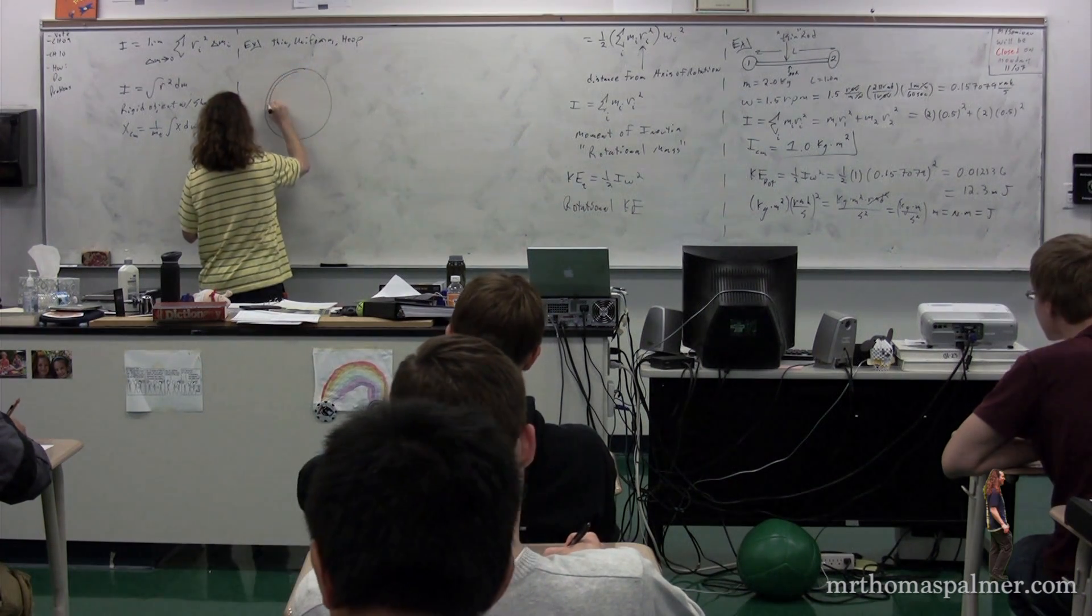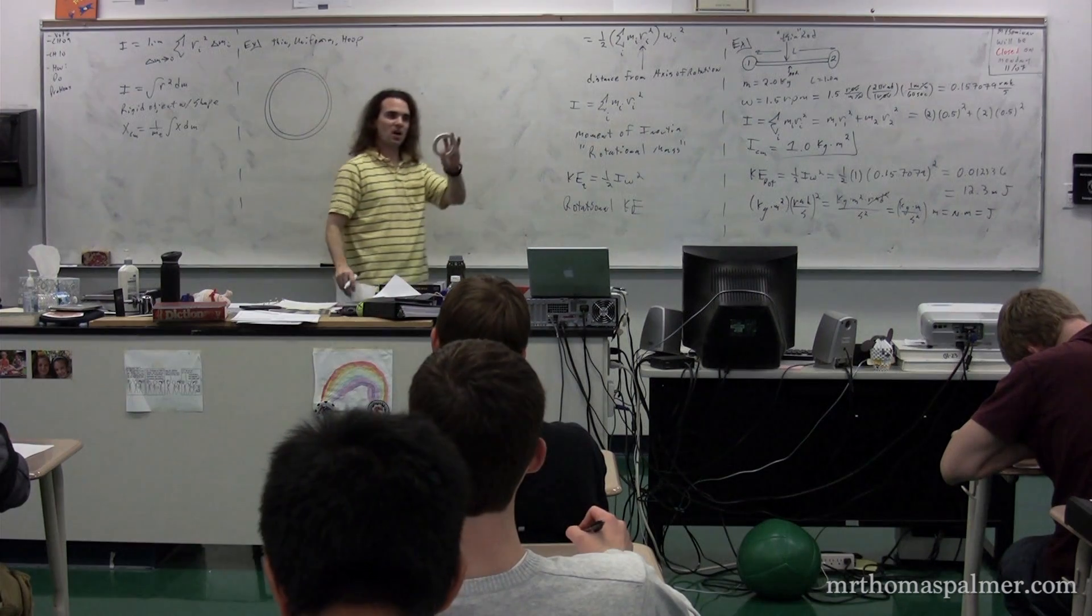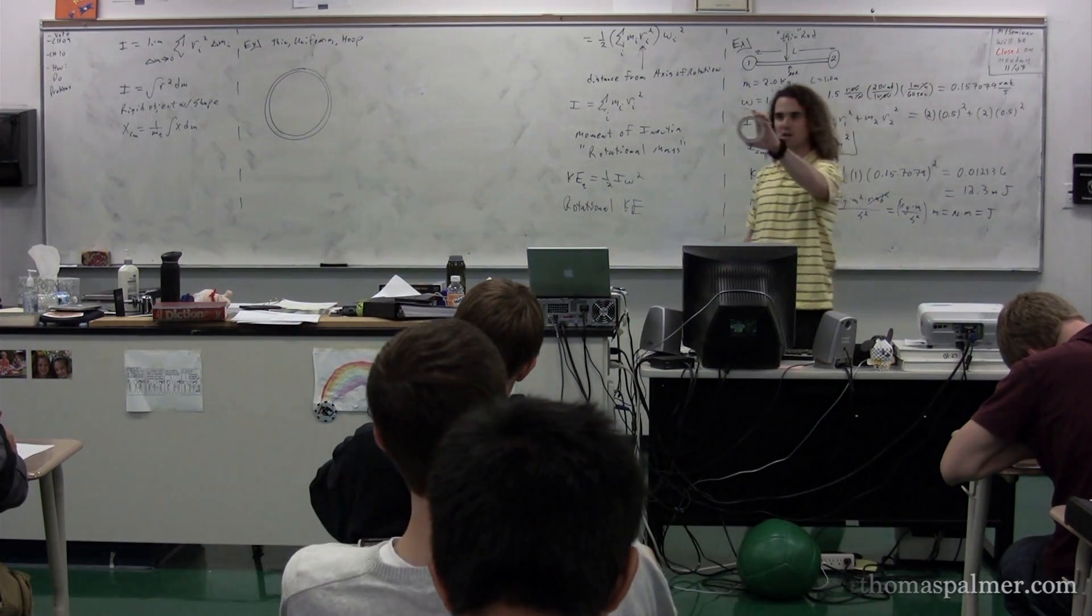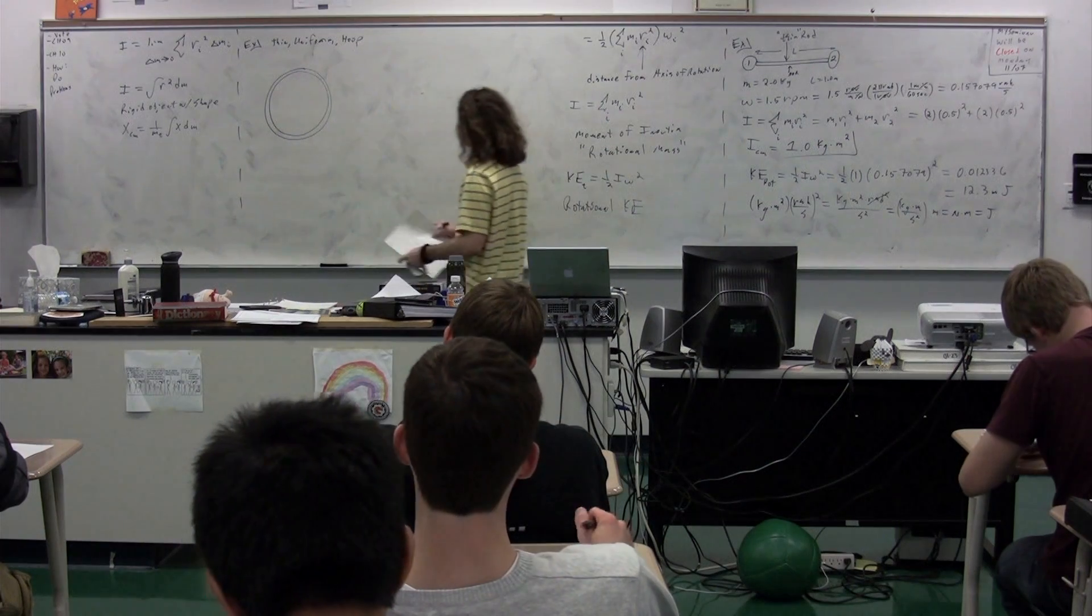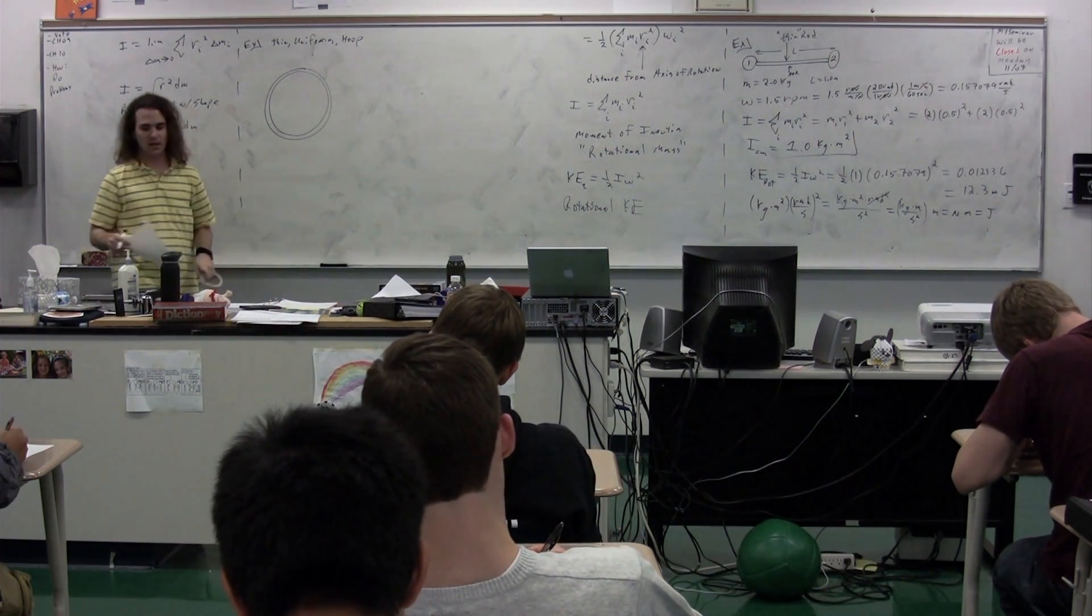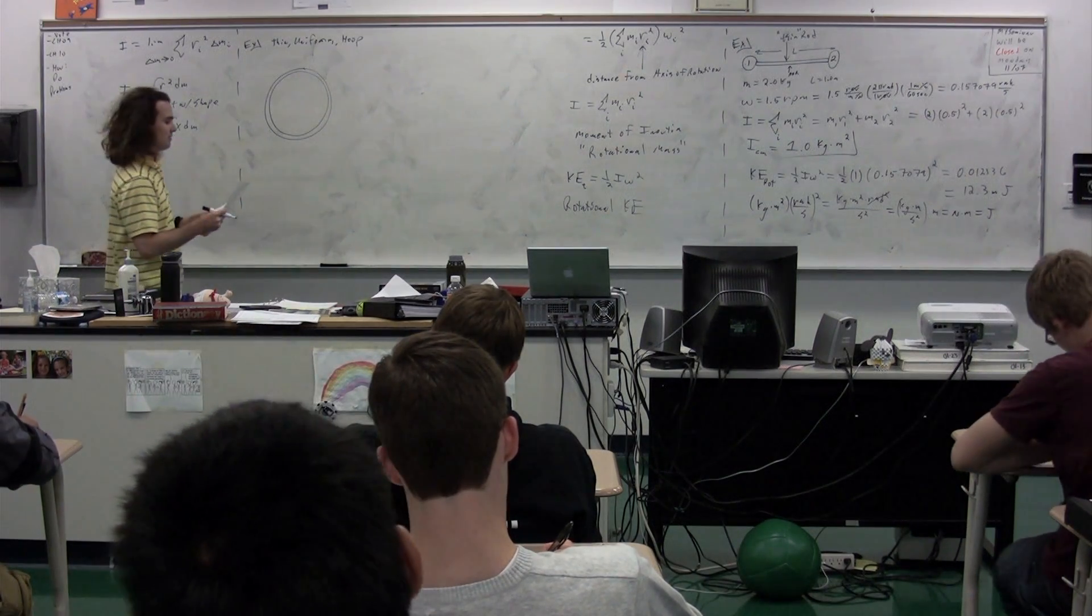In this particular case, the term thin means that the thickness of the hoop itself is very small relative to the radius of the hoop. So we're saying that whatever the thickness here is, is irrelevant because the thickness is very small relative to the radius of the hoop.